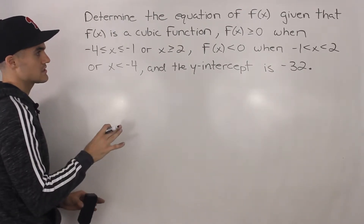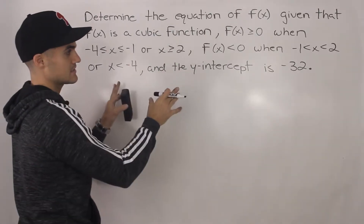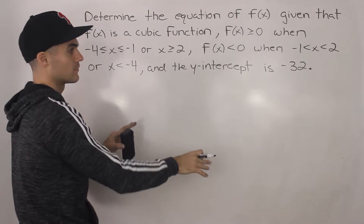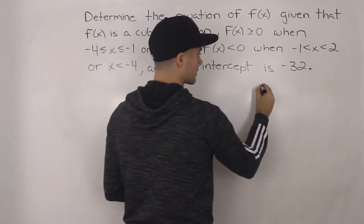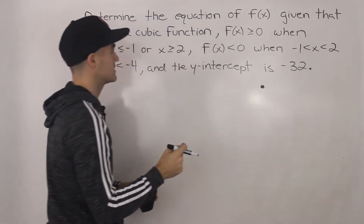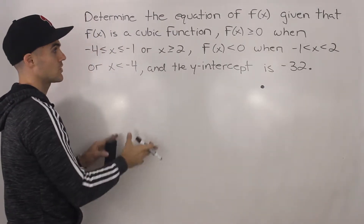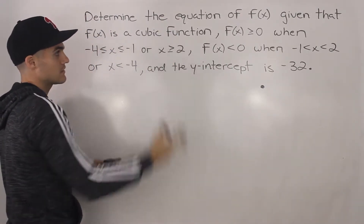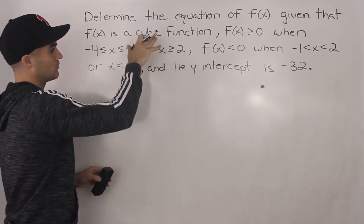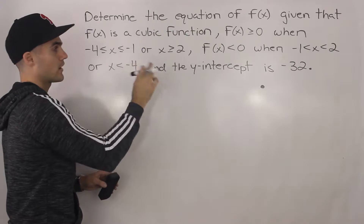When you get a question like this, my suggestion is to take this sentence and put it in list form, just so you can see it better. A lot of times with these types of questions, students miss things in the sentence when they're trying to draw the graph and make the equation. So go one by one through everything that's said and write it in a list.